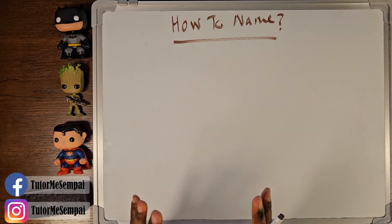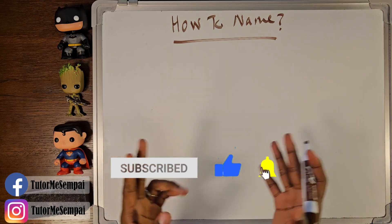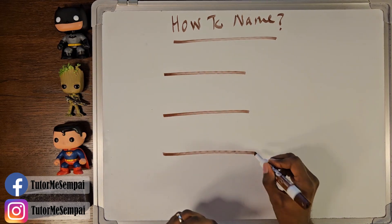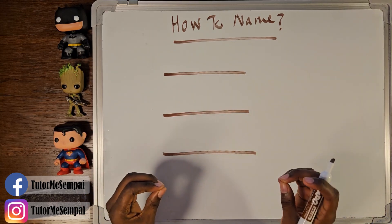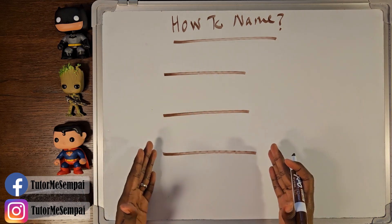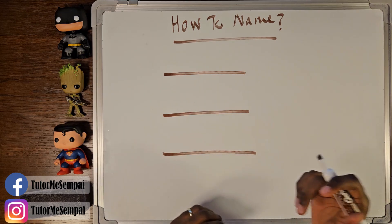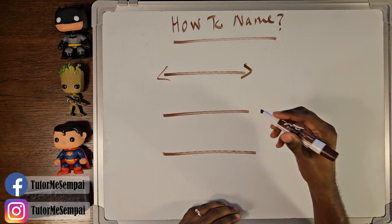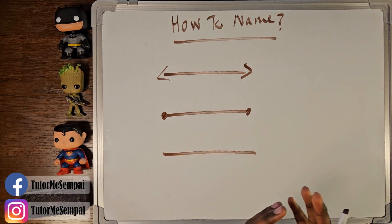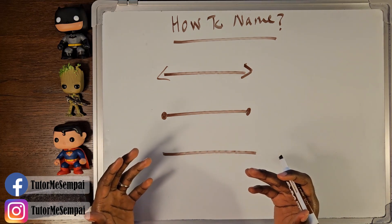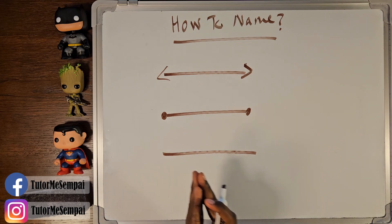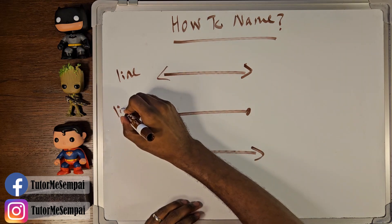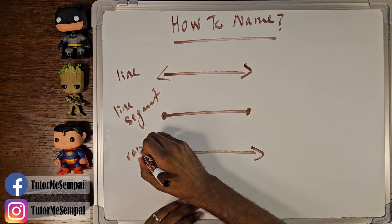Previously on this channel, I've given you a very quick explanation on the differences between your lines, your line segments, and your rays. They all start in a relatively similar way — the main difference is going to be the ends. If you have a line, your ends are going to have arrows. If you have a line segment, your ends are going to have points. And if you have a ray, you're going to have a combination of the two — a point on one end and an arrow on the other.